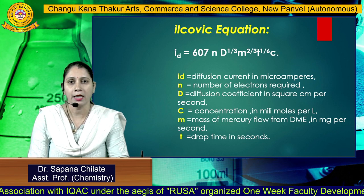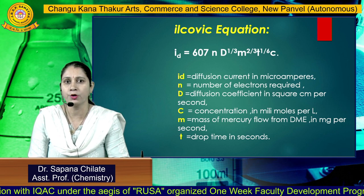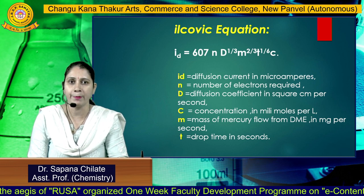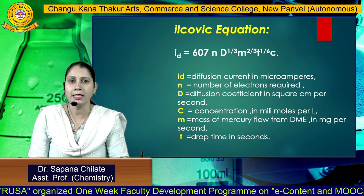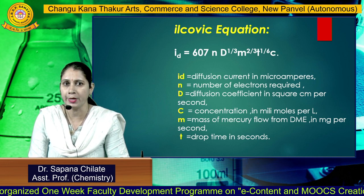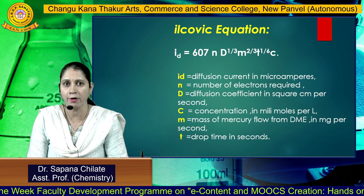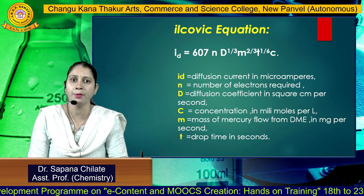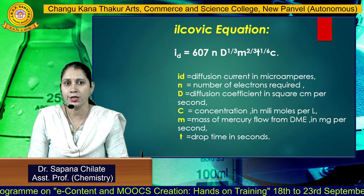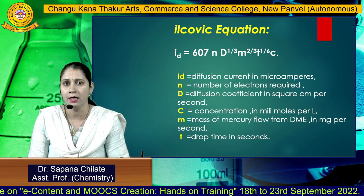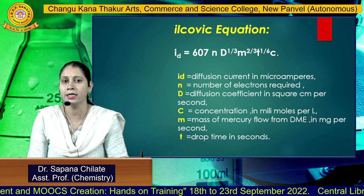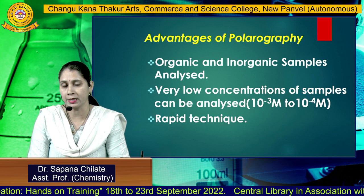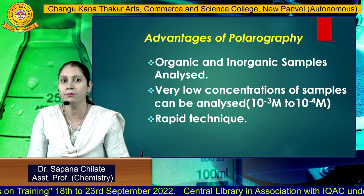The Ilkovic equation is given as: ID = 607 × n × D^(1/2) × M^(2/3) × t^(1/6) × C. Here, ID is the diffusion current in microamperes. N is the number of electrons involved during the reaction. D is the diffusion coefficient in square centimeters per second. C is the concentration in millimoles per liter. M is the mass of mercury. T is the drop time in seconds.